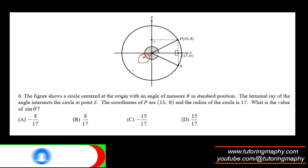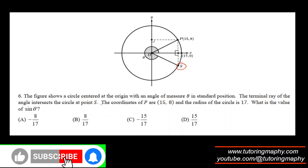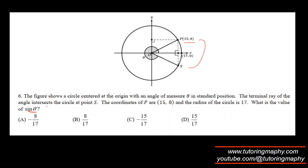Here the angle clearly ends at S. The coordinates of P are given, and P and S are symmetrically placed. Sine of theta is opposite over hypotenuse. The hypotenuse has to be 17, because that's the radius of the circle. The opposite is the height, which will be the same magnitude but negative — so if P has height 8 units, S will have negative 8 units. So sine theta is negative 8 over 17, which is option A.